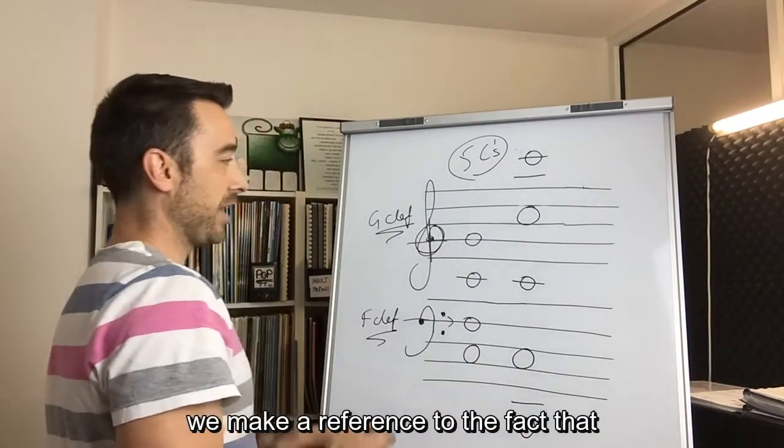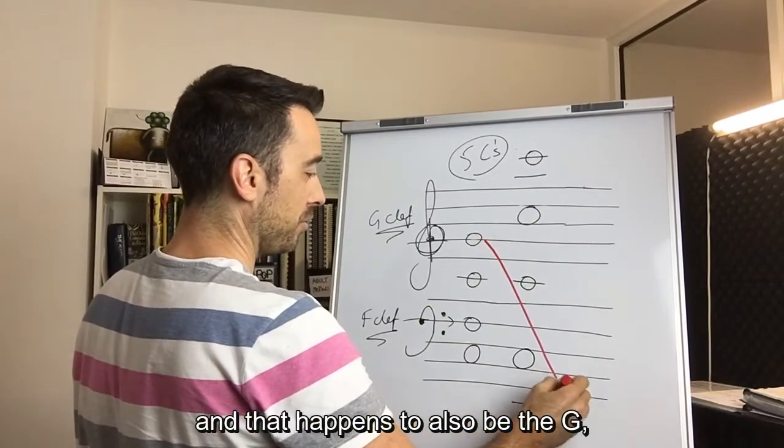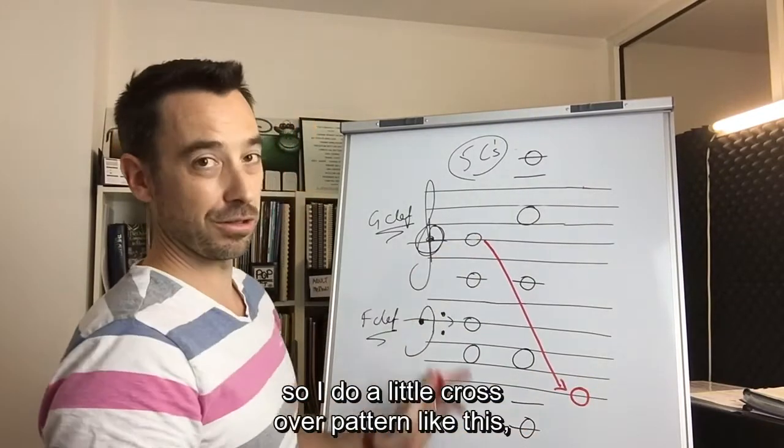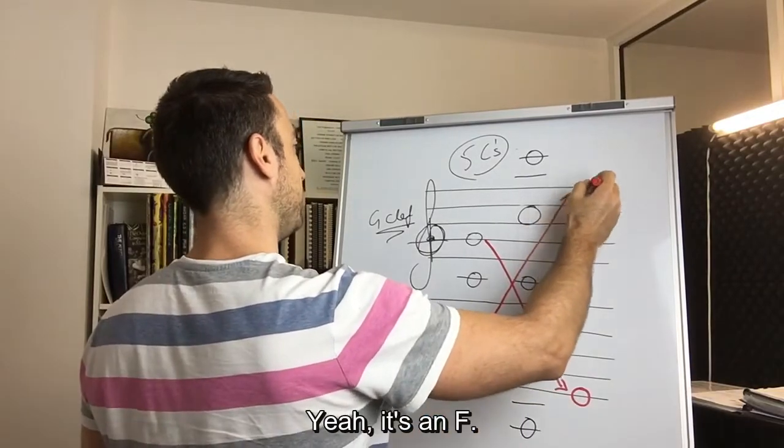And then lastly, we make a reference to the fact that it's good to know the bottom line, and that happens to also be a G. So I do a little crossover pattern like this. And guess what the top line is, guys? Yeah, it's an F.